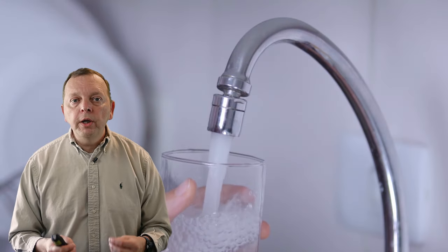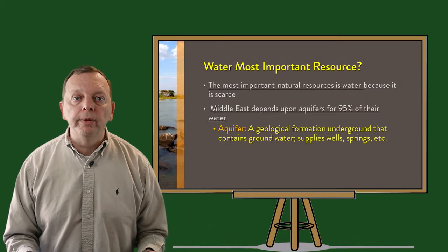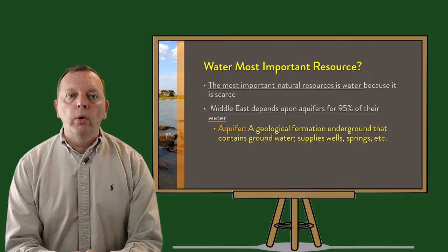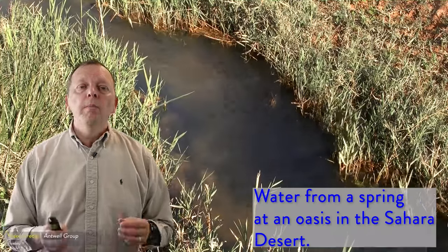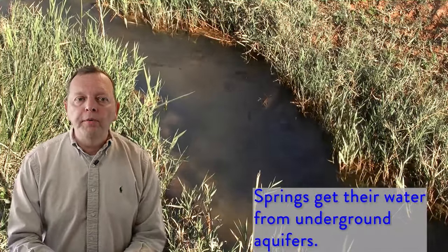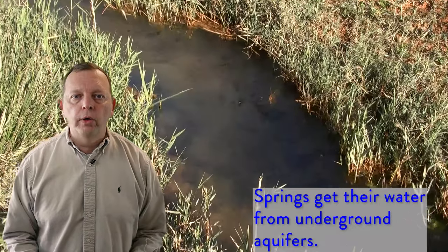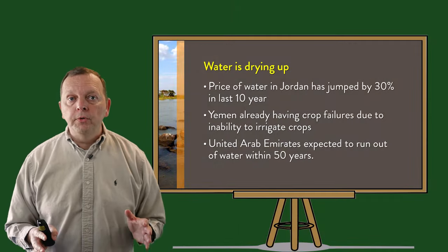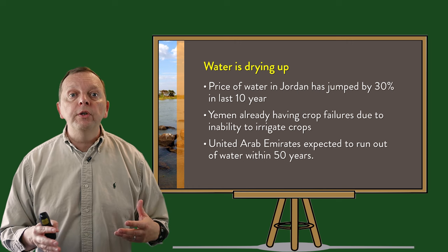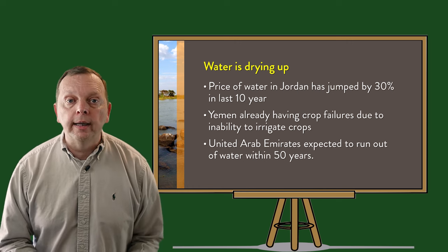While oil is critically important, the other most important resource in the region is scarce: water. The region has only 6% of the world's population but only about 1% of the world's renewable fresh water. Because most of the surface is desert, people rely upon aquifers for drinking water — but the water in aquifers is quickly being used up. In Jordan, the price of water has risen by 30% in just the last 10 years.